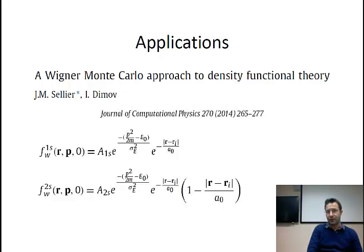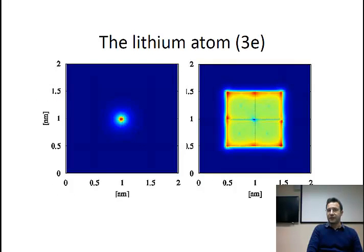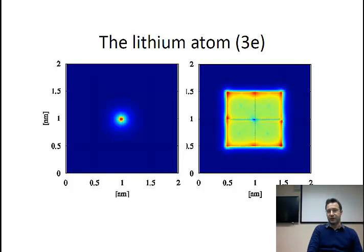The first atom we studied to benchmark our method was the lithium atom, which is practically very simple — it has only three electrons. Two are in the 1s state (spin-up and spin-down), and the third is in the 2s state. Everything is well known and we know how the system should behave.